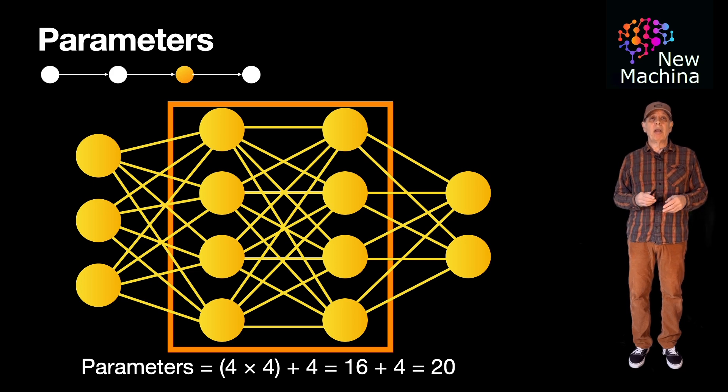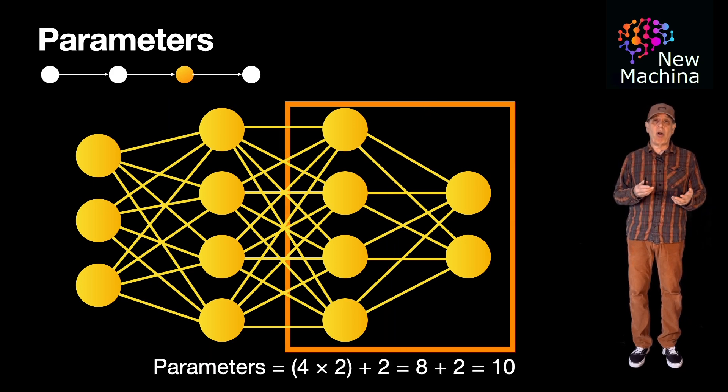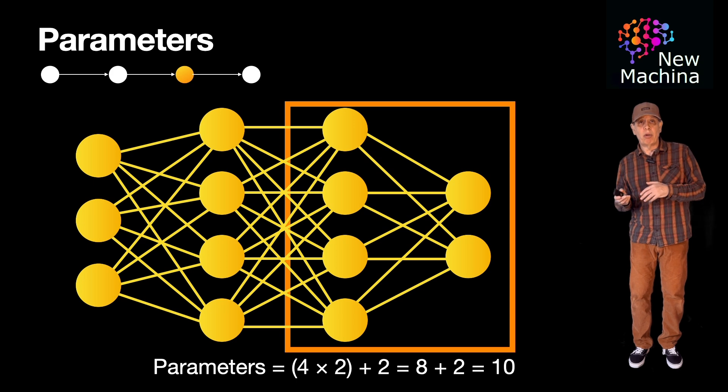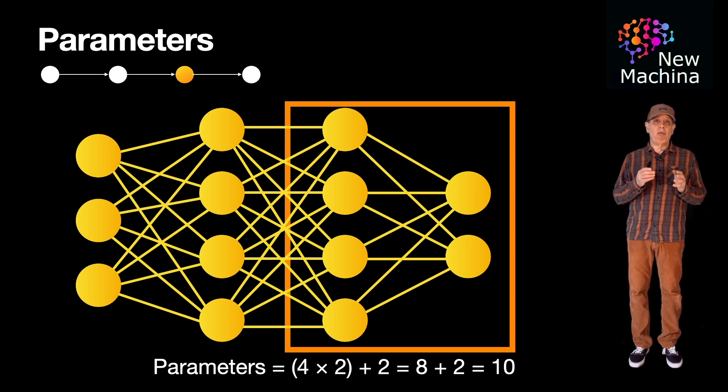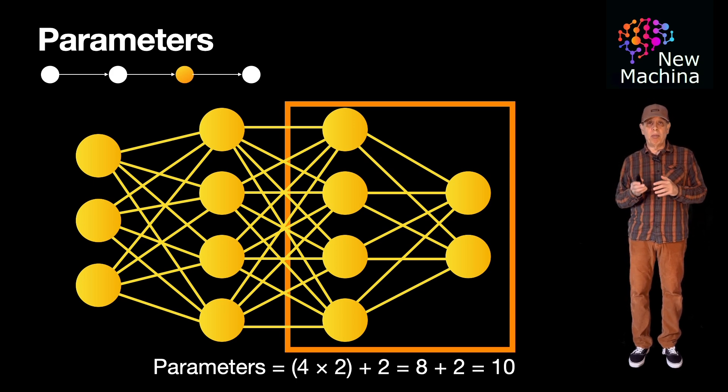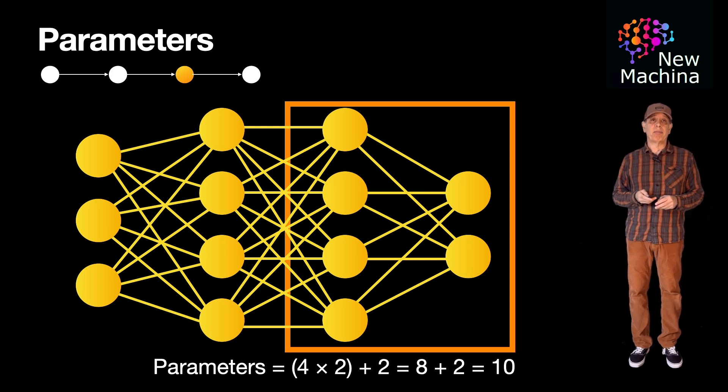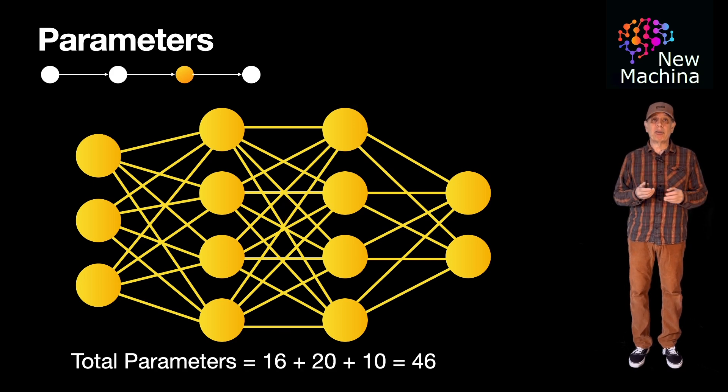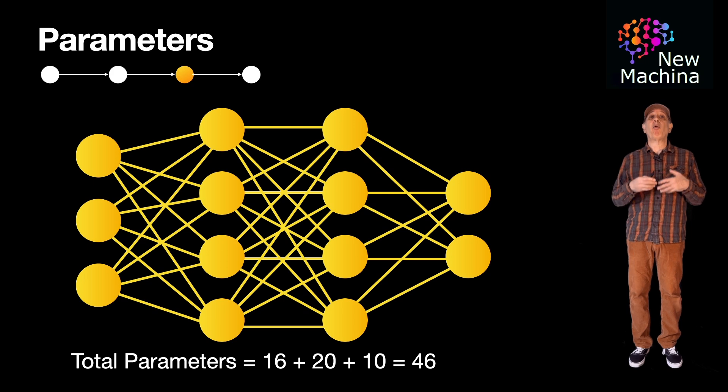So in step three, from the second hidden layer with four neurons which maps to the output layer with two neurons, we get four times two plus two biases, which is equal to 10 parameters. So in total, aggregating up all the parameters, we get 16 plus 20 plus 10 gives us 46 parameters.